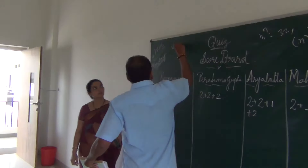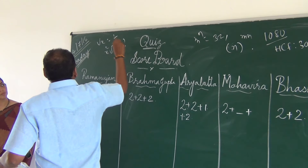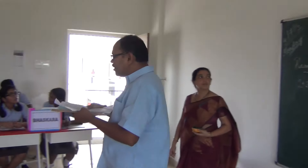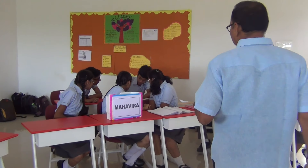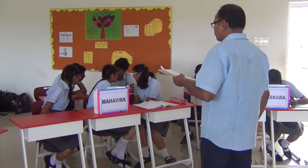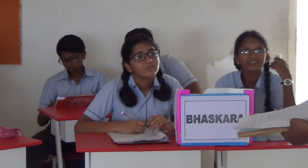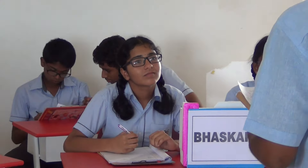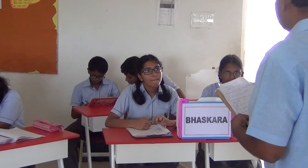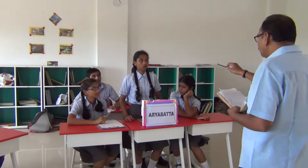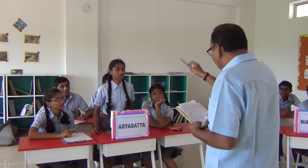If root x equals 2, find the value of x squared root x. The approximate value of root 2 is 1.41. Very good.